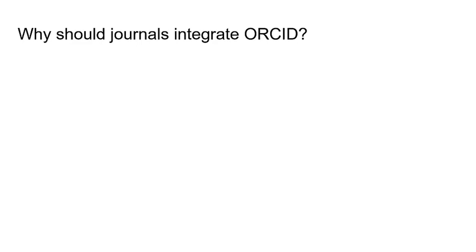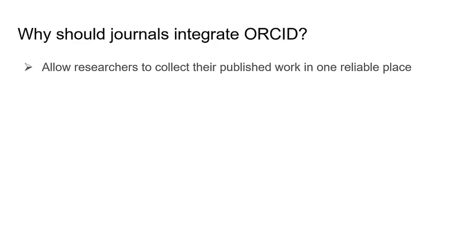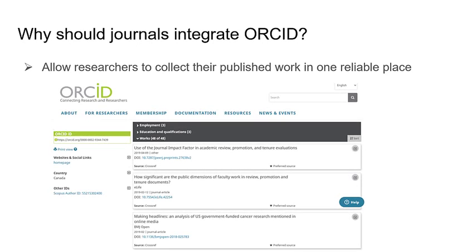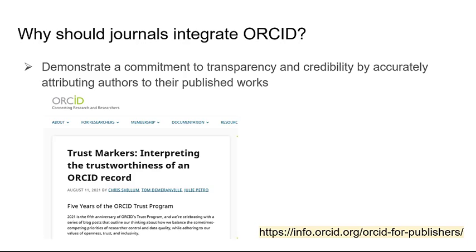There are a few ways that journals will benefit if they choose to implement the ORCID plugin with the member API. Journals can support their authors by giving them an easy way to connect their published research to their ORCID record. This gives authors a reliable collection of all their published work which will remain accurate and consistent regardless of changes in role, institution, or a change to their first or last name. In addition to supporting authors, integrating ORCID in your journals demonstrates a commitment to transparency and credibility by accurately attributing authors to their published works and authenticating articles through a trusted resource.